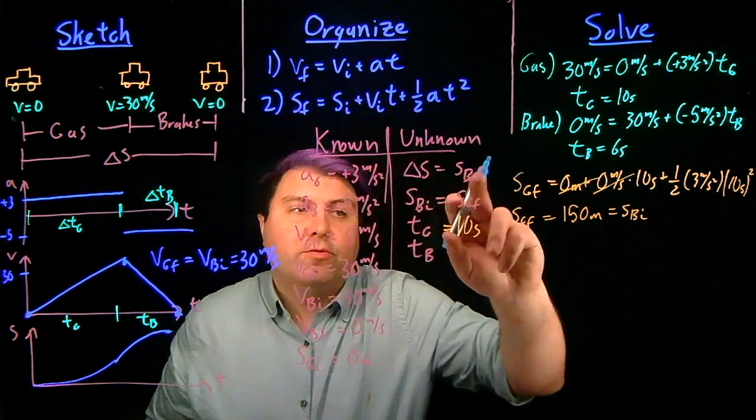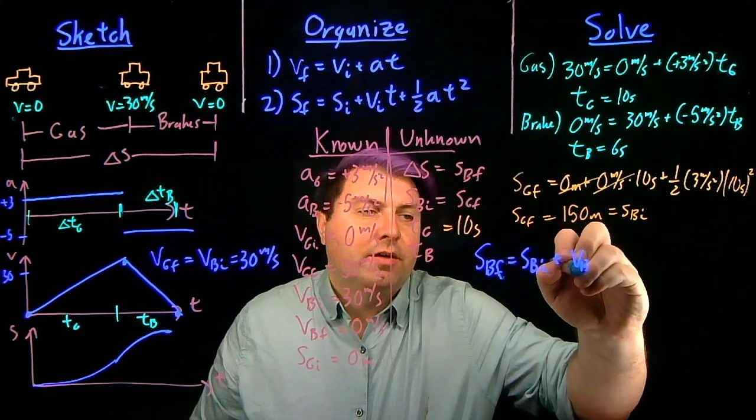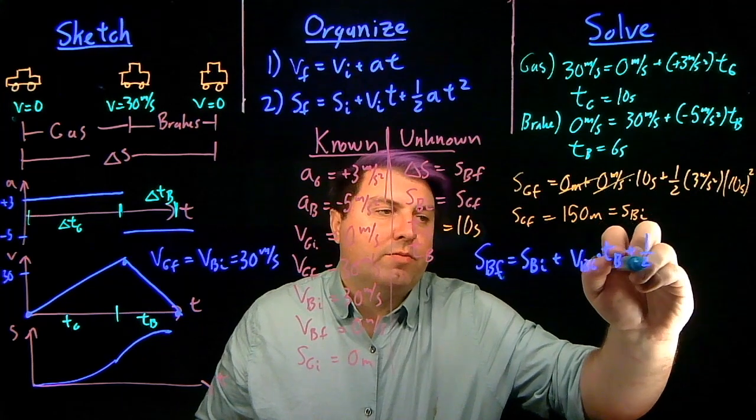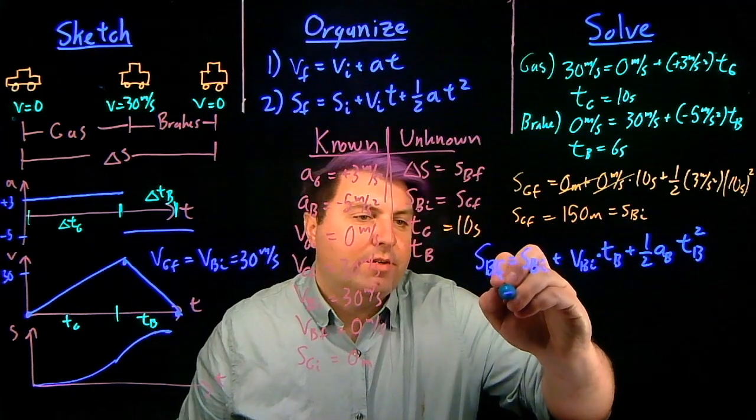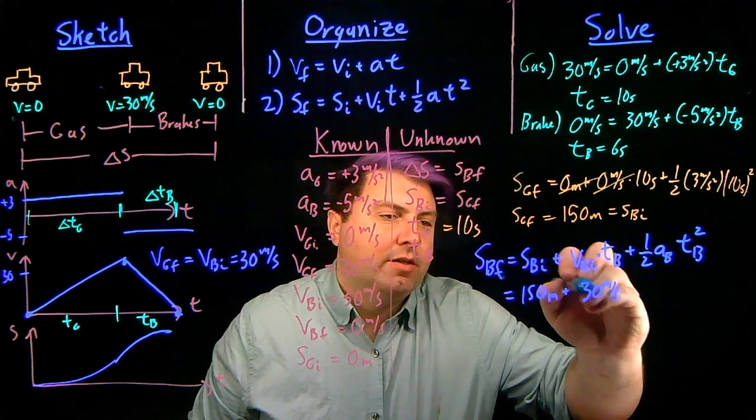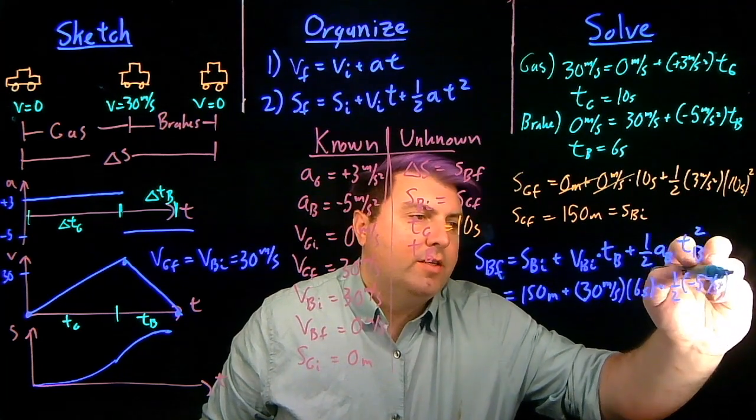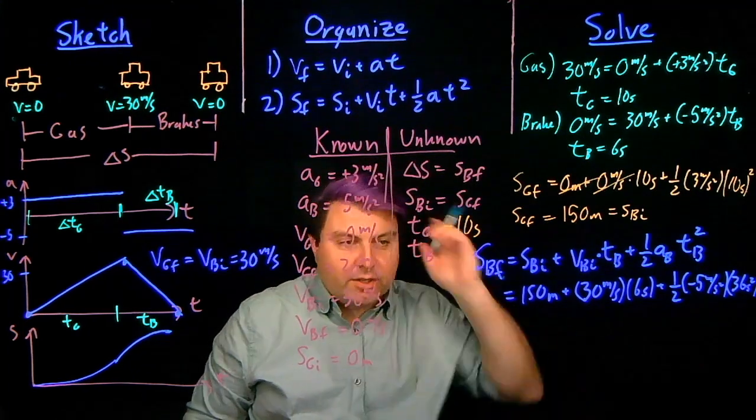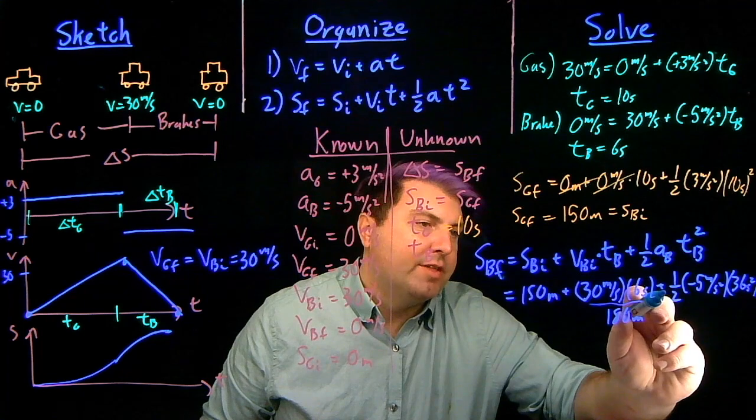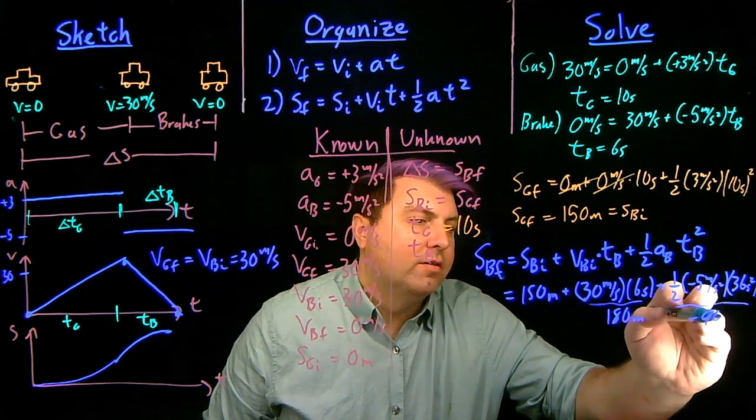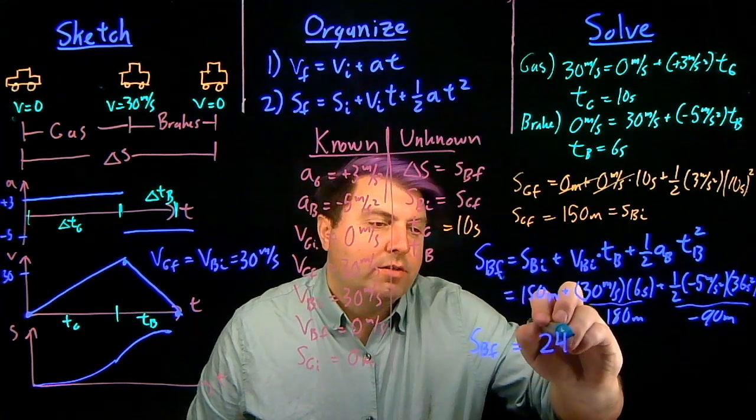And now we can use equation 2 for while we are braking. So Sbf equals Sbi plus Vbi times Tb plus 1.5 Ab times Tb squared. Going through, we just found out that Sbi is 150 meters. Vbi is 30 meters per second. Tb is 6 seconds. 1.5 is 1.5. Ab is negative 5 meters per second squared. And Tb squared is 36 seconds squared. And so then we just do a little bit of math. 30 times 6, this is 180 meters. 36 times 1.5 is 18. 18 times 5 is negative 90 meters. So we have 150 meters plus 90 meters. And so we get the Sbf is 240 meters.